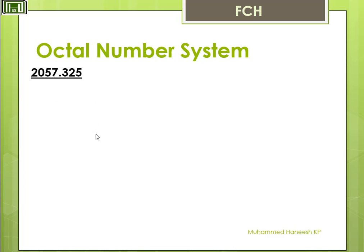Now here we have an example. We know that in the Octal number system the base is 8. Here is the Octal number 2057.325. All the numbers are below 8 — there is no 8.